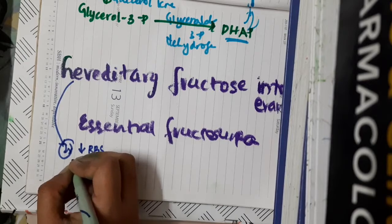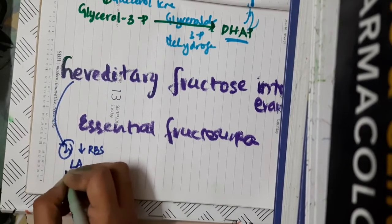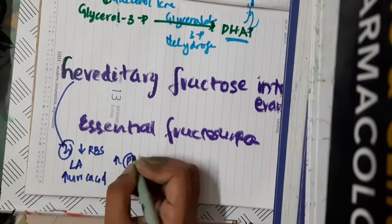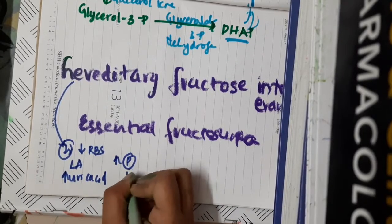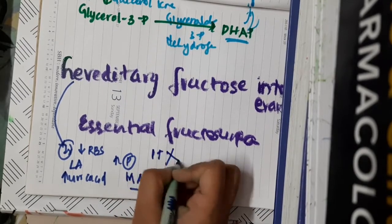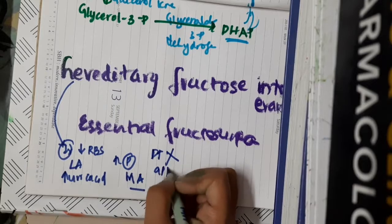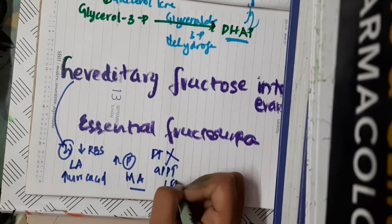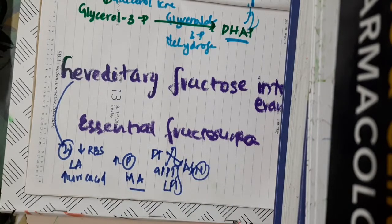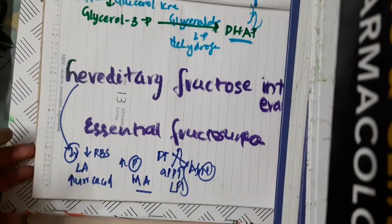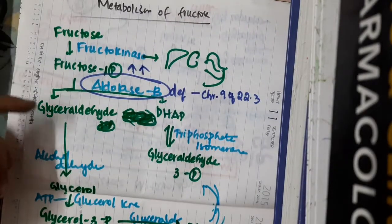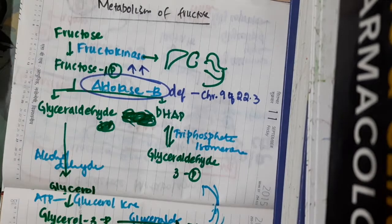On investigations for hereditary fructose intolerance, you see decreased blood sugar levels, marked lactic acidosis, hyperuricemia, hyperphosphatemia, hyperchloremic metabolic acidosis, aminoaciduria, deranged prothrombin time, aPTT, and abnormal liver function tests.